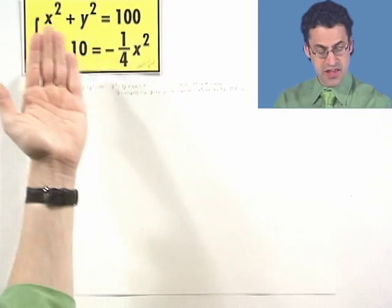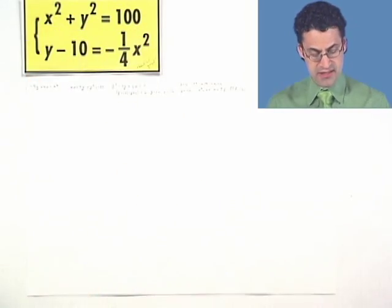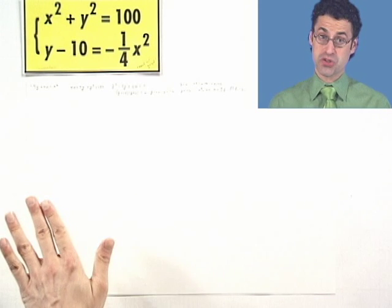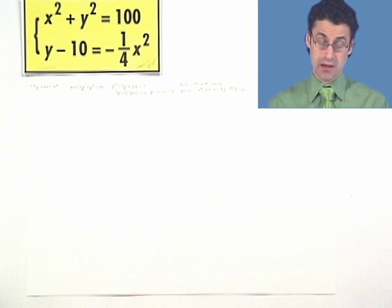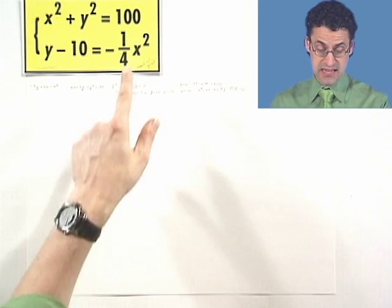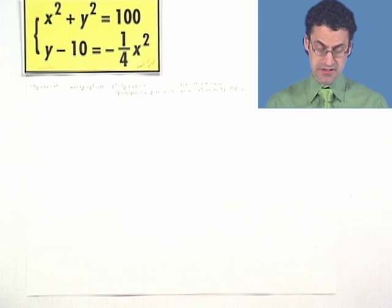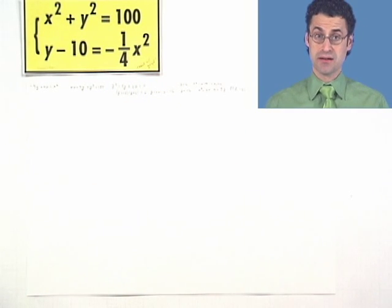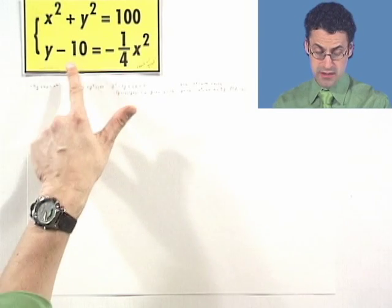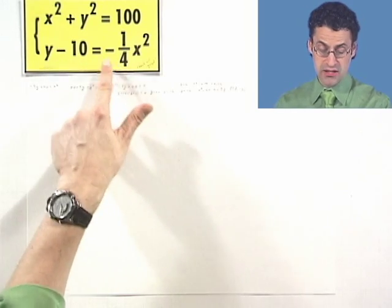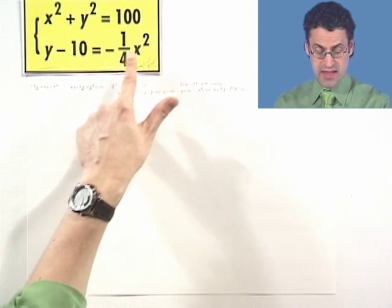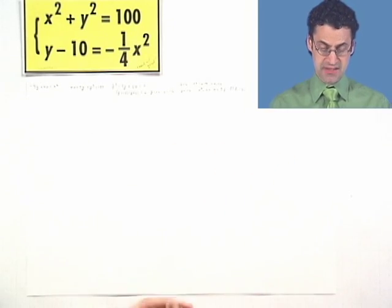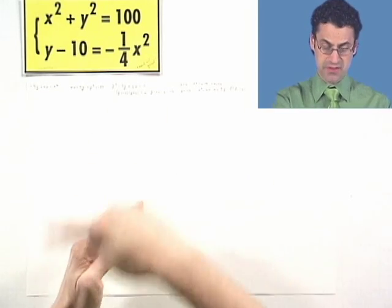This first equation looks like a circle centered at the origin with radius 10. The second equation has x squared but y is not squared, which tells me it's a parabola. Since x is squared and y is not, it's going to be a happy face or sad face parabola. The coefficient in front of x squared is negative, so it's a sad face parabola intersected with a circle.